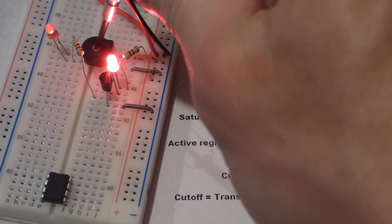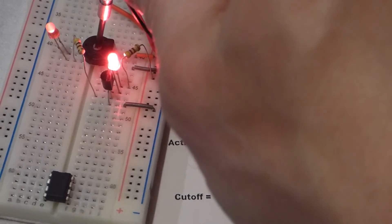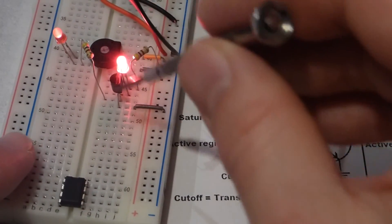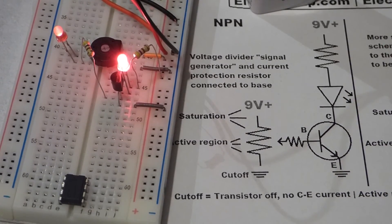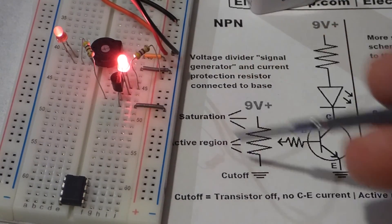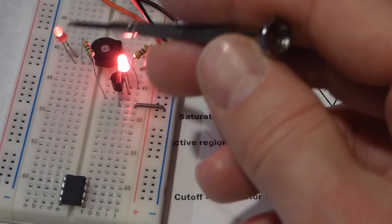Now we're going to turn this up a little bit more. Right about here, no matter how much current I give to the base, if I give it more, no more current appears to be going through the load. So that's our saturation point.